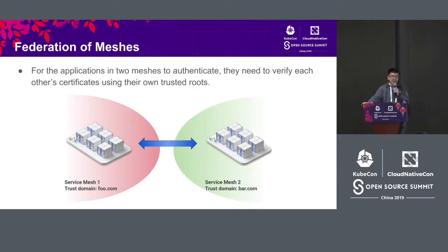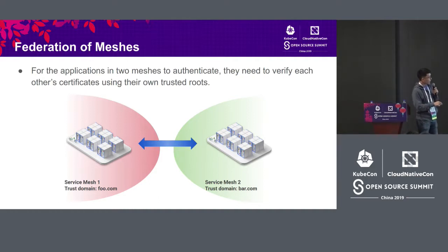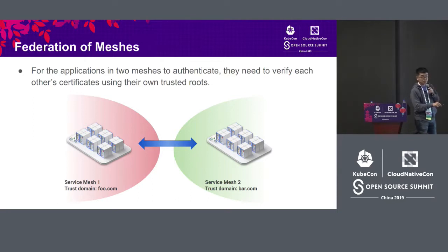We are talking about identity federation specifically. For the applications in two different service meshes to authenticate each other, we need to verify each other's certificates using their own trust roots. For example, we have service mesh one with trust domain foo.com, and service mesh two with trust domain bar.com. If you want a service in service mesh one to authenticate a service in service mesh two, you need that service to be able to authenticate the certificate presented by the other end using its own root of trust.